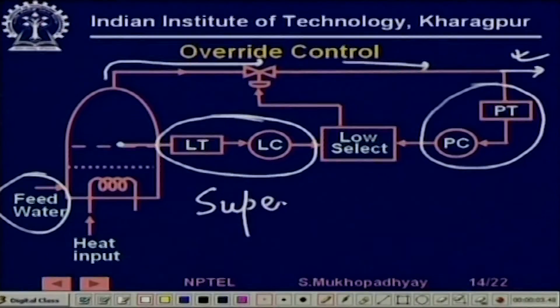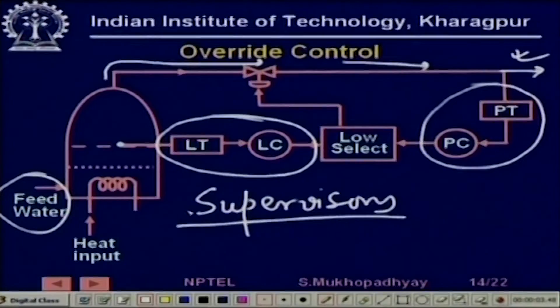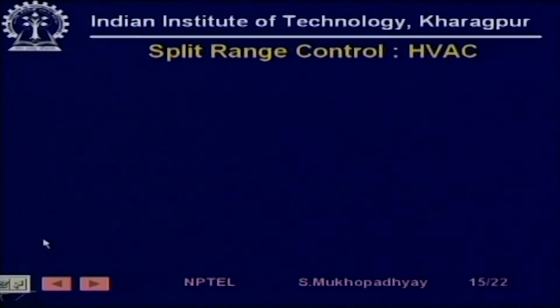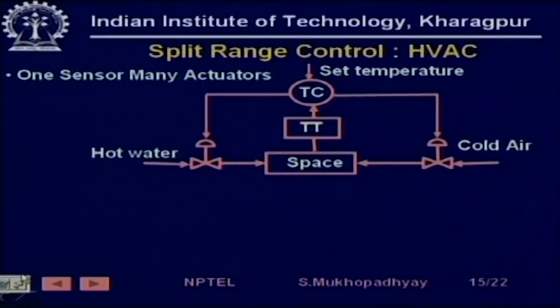This is essentially a supervisory control, because you are supervising the process and changing its configuration. Coming back to the next topic — the last one — that is split range control. The first example is of heating, ventilation, and air conditioning (HVAC).